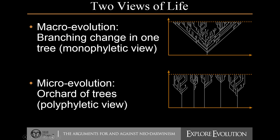In your book, they examine two different views: a monophyletic view — mono meaning one — one tree of life, versus polyphyletic, meaning many trees.